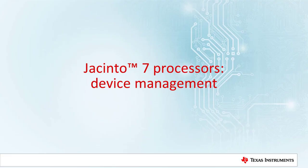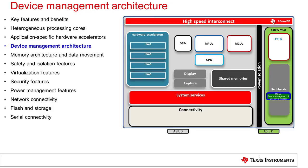The Jacinto 7 processors implement a hierarchical approach to device configuration and management. A small microcontroller called the Device Management and Security Controller, or DMSC, is responsible for all security configuration and much of the common resource configuration of the Jacinto 7 SoC.